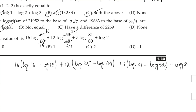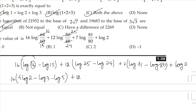Now log 16 is 2⁴, so 16 × 4·log 2 = 64·log 2, minus 16·log 15 which is 16·(log 3 + log 5). Then 12 × log 25 = 12 × 2·log 5 = 24·log 5, minus 12·log 24.